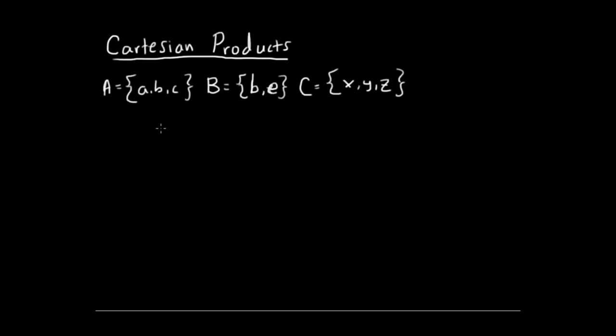Okay basically what a Cartesian product is, it's basically the cross product of two sets or I guess two or more sets. And you're going to represent the products in ordered pairs. So for example if I were to take the cross product of A times B which would be denoted like this A times B.